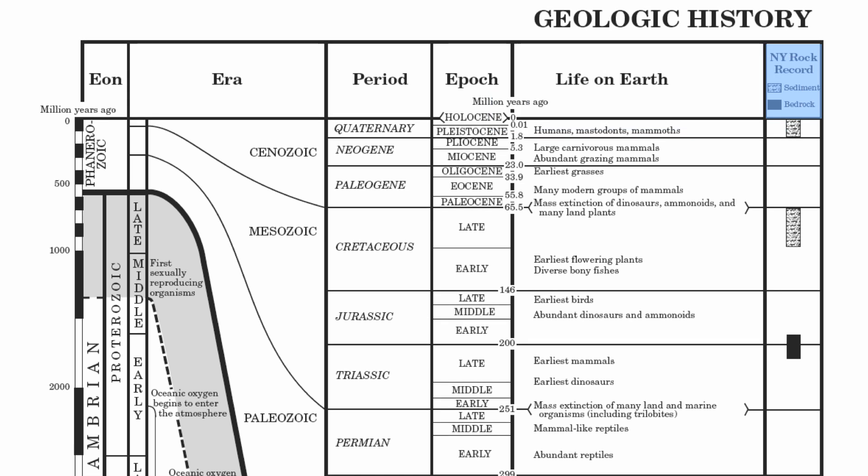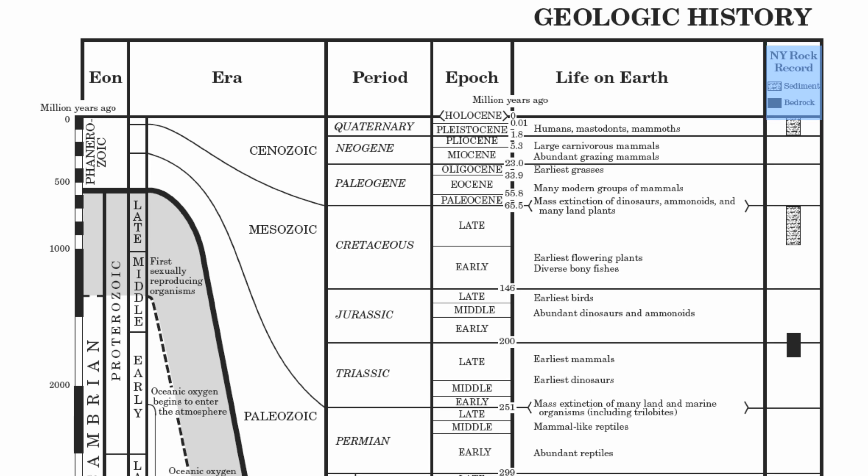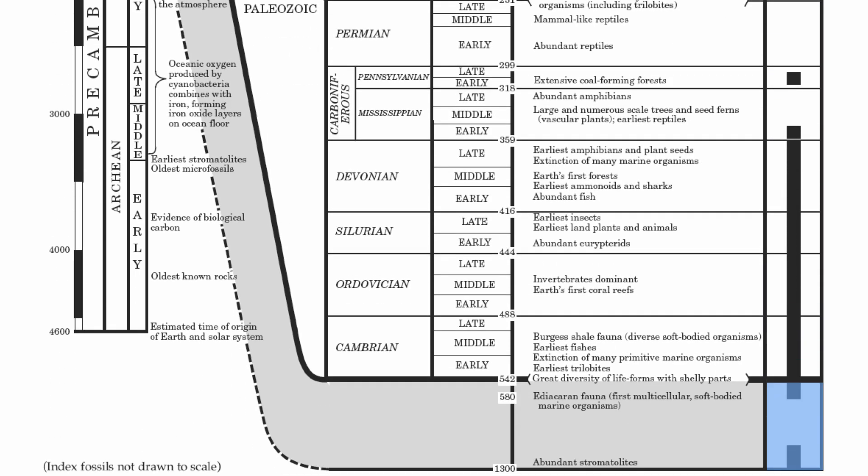The last piece of information on page 8 is your New York rock record. There's a key showing symbols for sediments and bedrock. Starting at the very bottom, you'll notice a black line — sometimes completely intact, other times with gaps and breaks. Those gaps indicate erosion. When there's a big gap in the rock record, that's called an unconformity. The Precambrian, for instance, does not have a complete rock record — there's a big gap, meaning an unconformity.